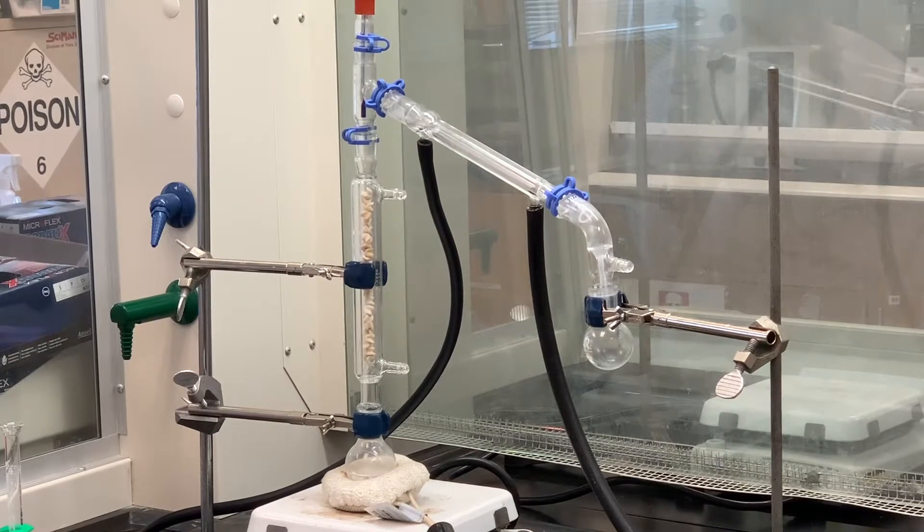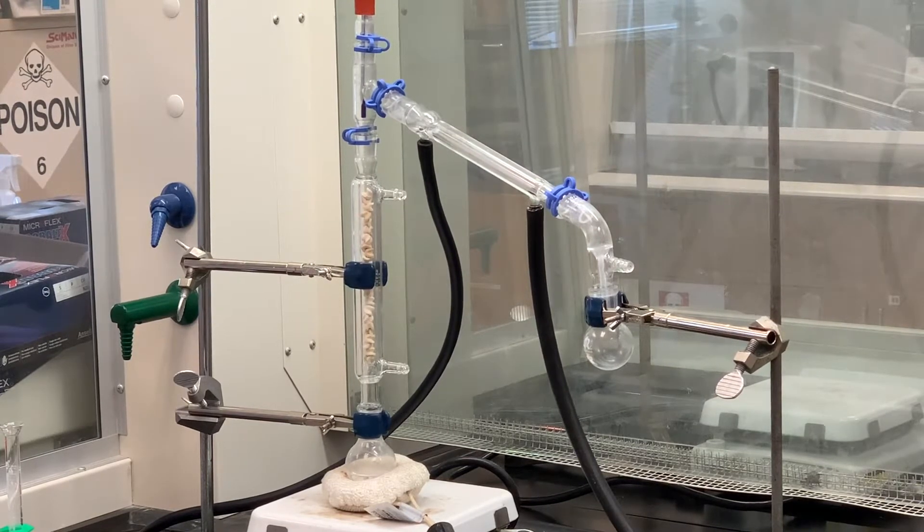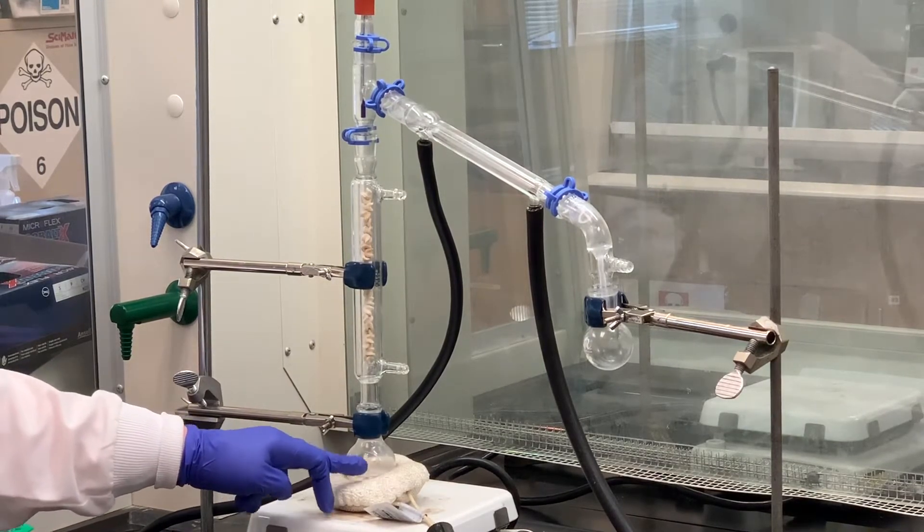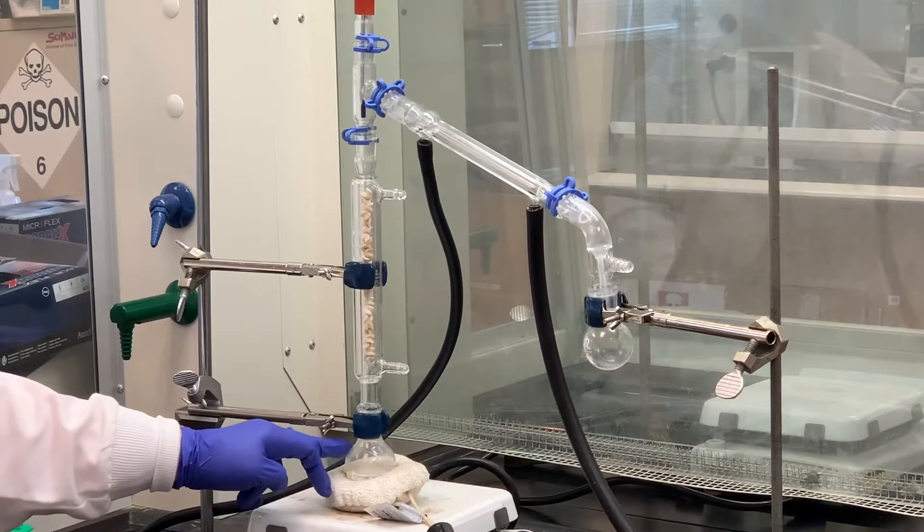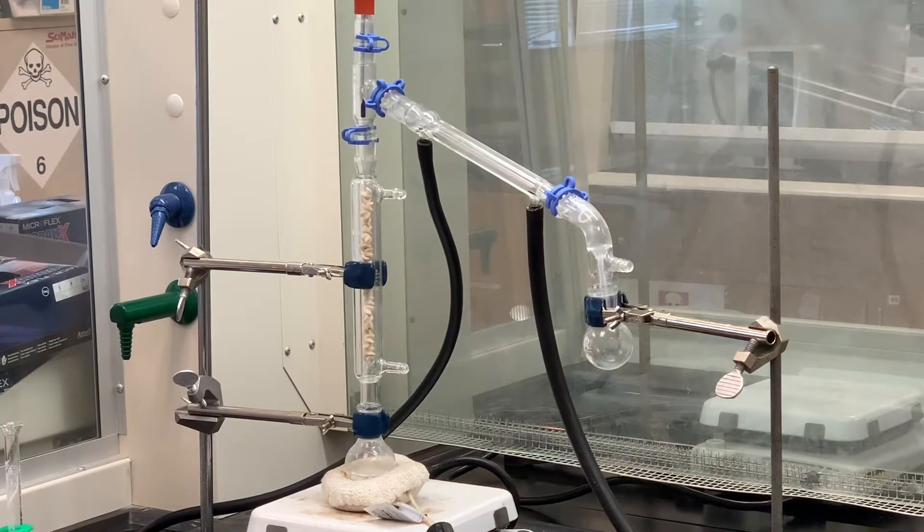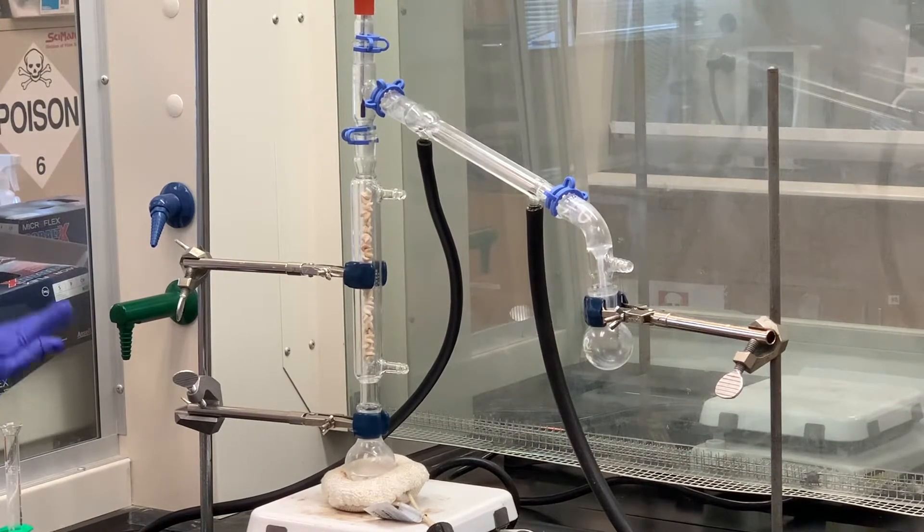There's two routes that carbocation can take. It could possibly react with the sulfuric acid, the bisulfate ion, if you will, to introduce the bisulfate ion onto the molecule. That would be a substitution reaction, like an SN1.